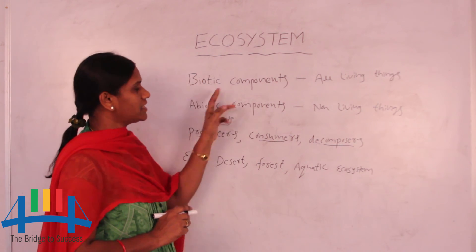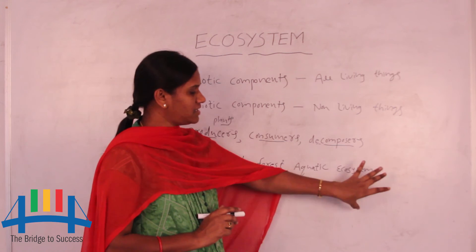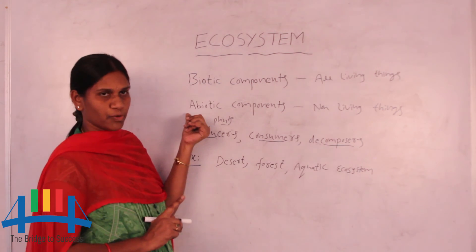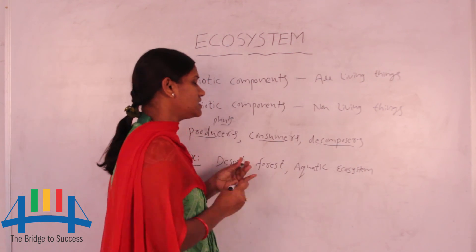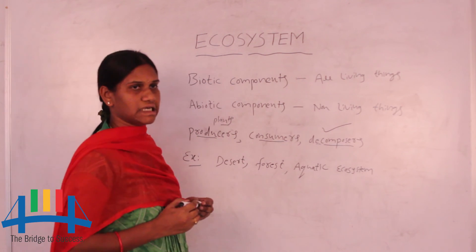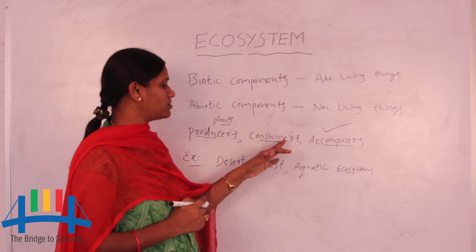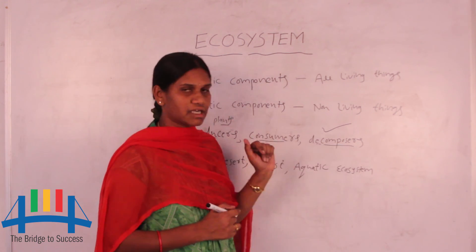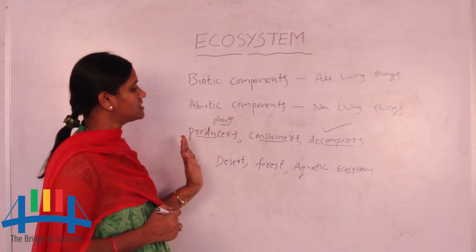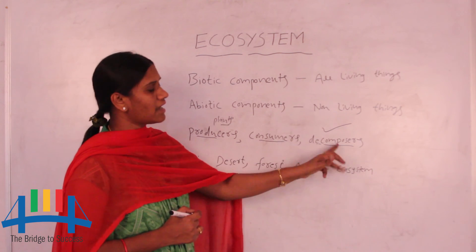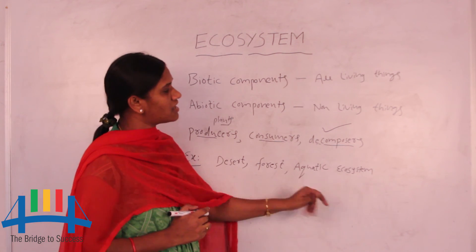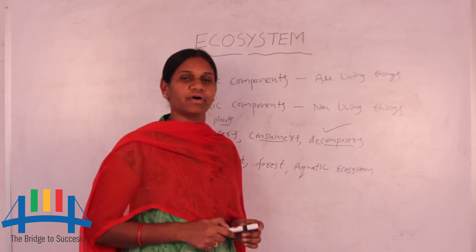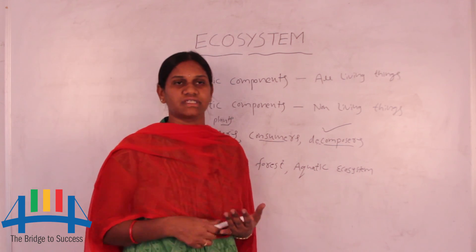Biotic and abiotic components are present in every ecosystem. The ecosystem is made up of biotic and abiotic components. Decomposers are very important — they help in recycling. When the dead bodies of producers or consumers decompose, it happens with the help of decomposers. So in every ecosystem, the major parts are producers, consumers, and decomposers. Thank you, friends.